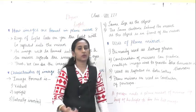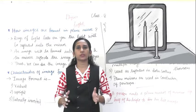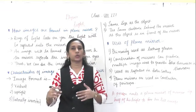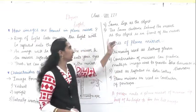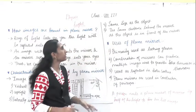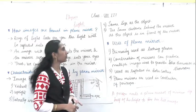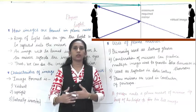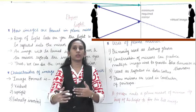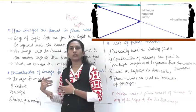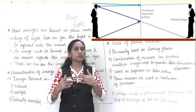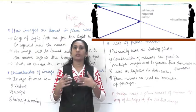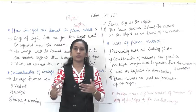The fourth characteristic is that the image is the same size as the object. As you are standing in front of the mirror, you will see the same size in the mirror — you will not see yourself as double. If you are thin, you cannot see yourself as fat in the mirror. The fifth characteristic is that the image is at the same distance behind the mirror as the object is in front. If you are standing five meters away from the mirror, the image is also five meters behind the mirror.